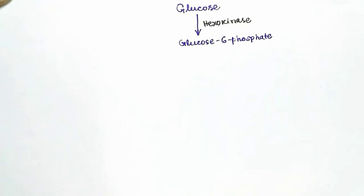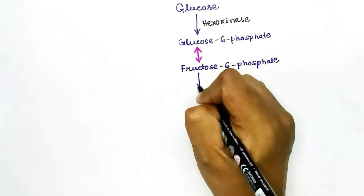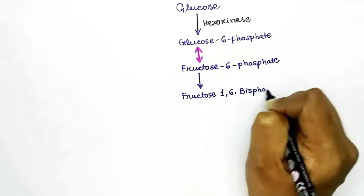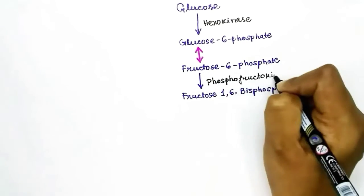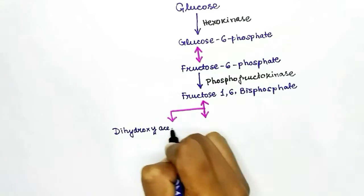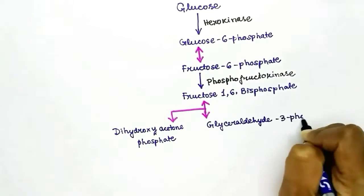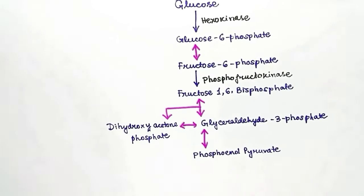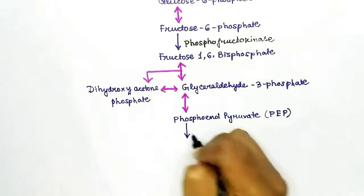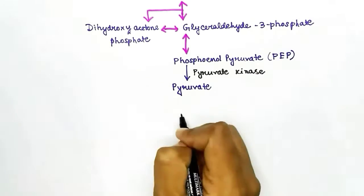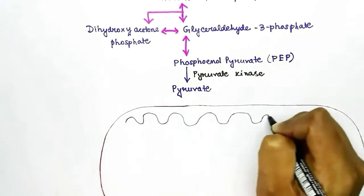The first irreversible step is formation of glucose-6-phosphate from glucose, using the enzyme hexokinase — this cannot be reversed by the same enzyme. The next step, glucose-6-phosphate to fructose-6-phosphate, is reversible using the same isomerase enzyme. The second irreversible step is fructose-6-phosphate to fructose-1,6-bisphosphate. After several reversible steps, the third irreversible step is formation of pyruvate from phosphoenol pyruvate, using the enzyme pyruvate kinase.